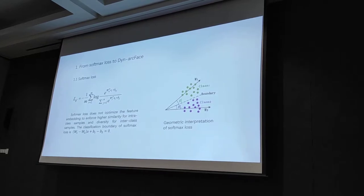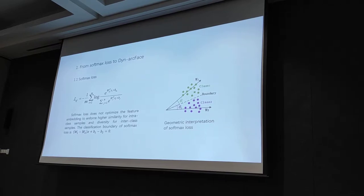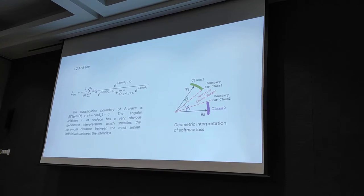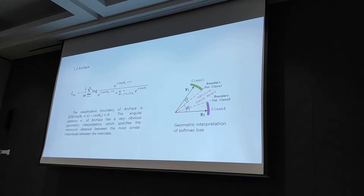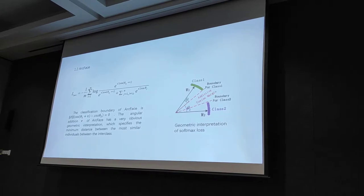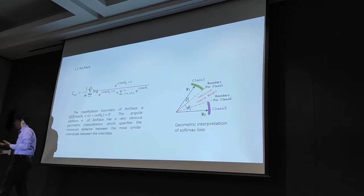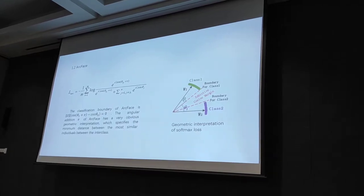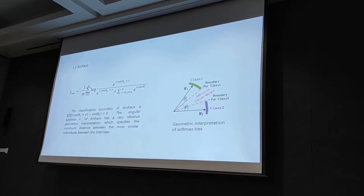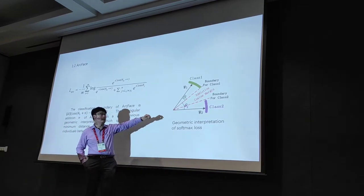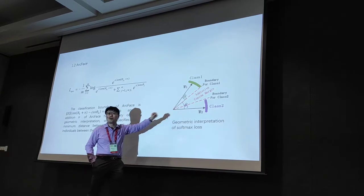There are a lot of work talking about how to further improve this loss function. One typical way, as the author reviewed, is called ArcFace. I think this is one of the most widely adopted approaches to further improve the loss function. One of the key ideas is adding this angular term m. By adding this term, this loss function further improves the threshold to be saturated. If you want to see an explanation from the figure, it means that you need to have this kind of additional margin between the two classes.